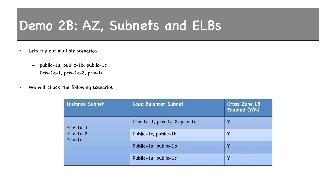The final scenario is public 1a and public 1c — our actual setup. We have EC2 instances running in both, and if we enable cross-zone load balancing the load balancer distributes load across all EC2 instances launched. The key takeaway is: even with cross-zone load balancing enabled, you must have public subnets attached to the load balancer from the same AZ where your EC2 instances are running.